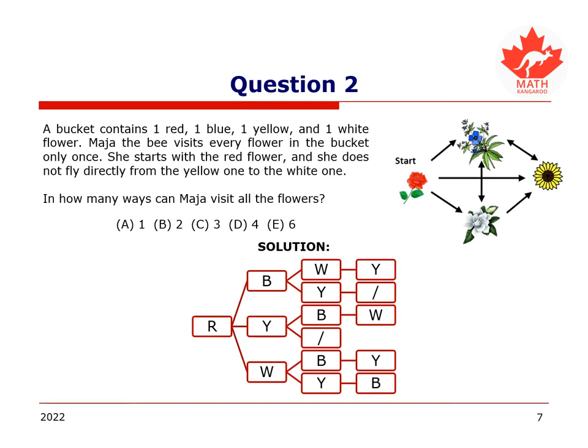Let us draw arrows from one flower to another, and we can see that there are three arrows leaving the red flower. The bee starts from the red flower, and that there is no arrow from the yellow to the white flower, as the bee does not fly in this direction. It is important to remember that the bee visits every flower in the bucket only once.